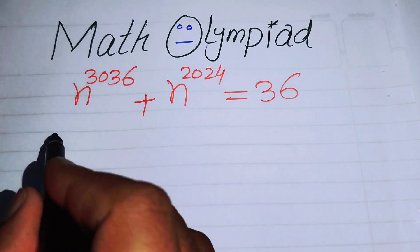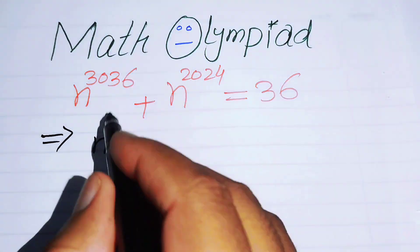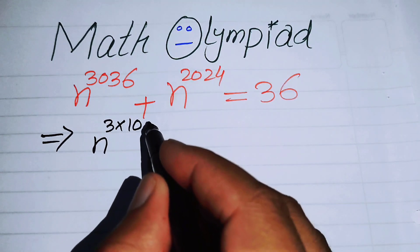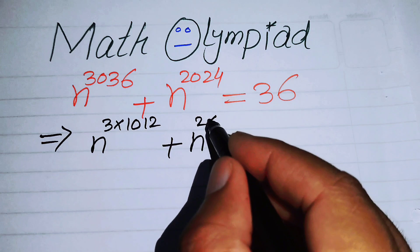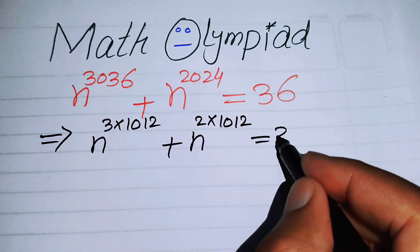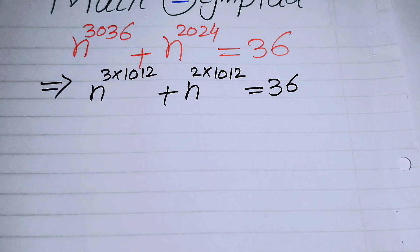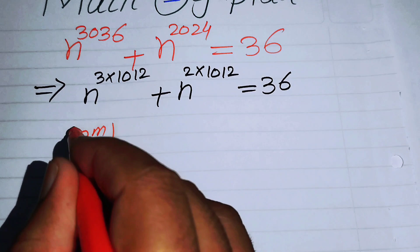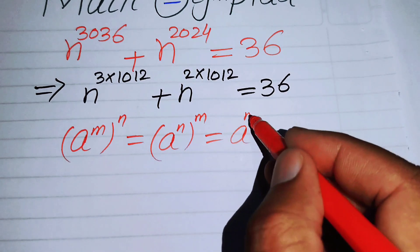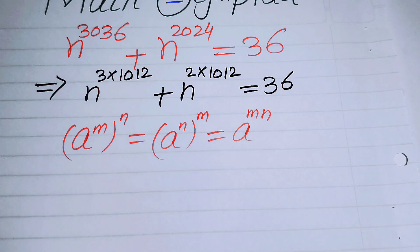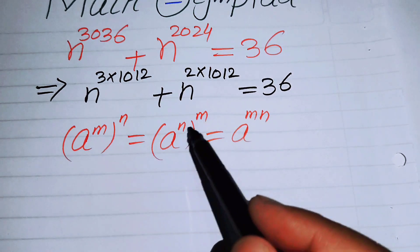The first thing we are going to do is rewrite this equation. We write n^3036 as n^(3×1012) and n^2024 as n^(2×1012), so the equation becomes n^(3×1012) + n^(2×1012) = 36. Now we apply the exponential law: a^(m×n) = (a^m)^n, which tells us that we can interchange exponents and always get the same answer.